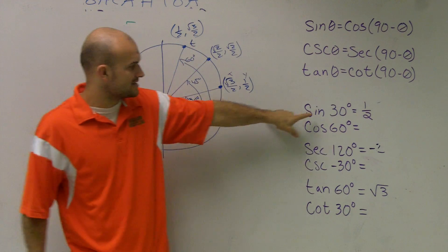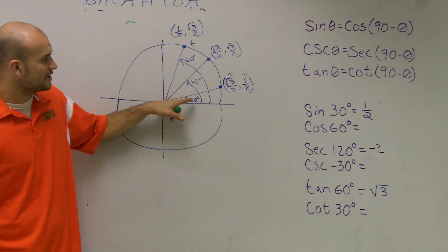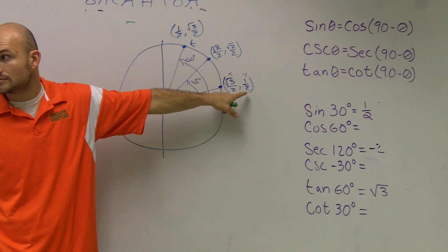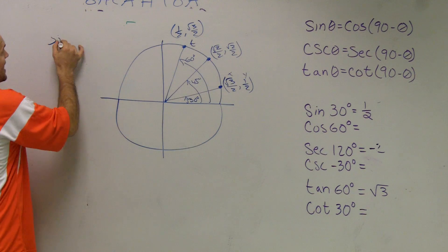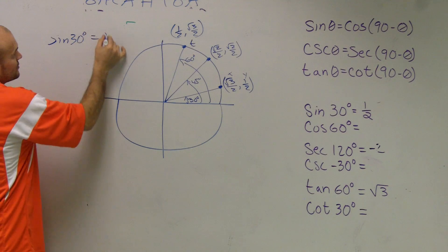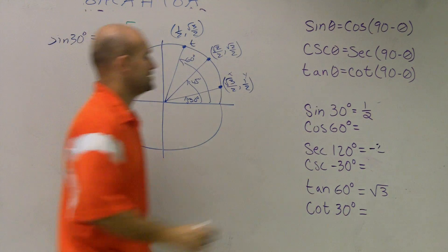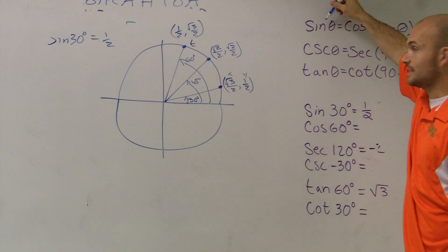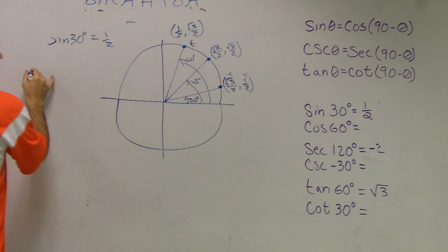So, let's say they look at sine of 30 degrees. Sine of 30 degrees is 1 half. Does everybody see that? Sine of 30 degrees equals 1 half. Now, by using our co-function identity, if I say sine of 30 degrees,